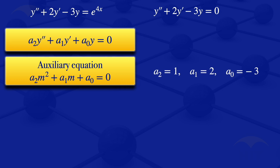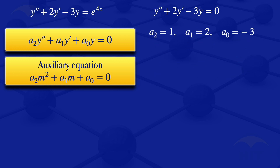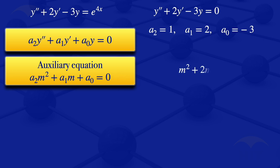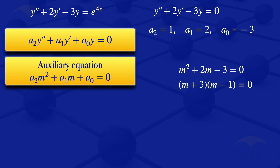With those coefficients a2, a1, and a0, we can now obtain our auxiliary equation by substituting these values. Our auxiliary equation becomes m² + 2m - 3 = 0. We can factorize this to get (m + 3)(m - 1) = 0.